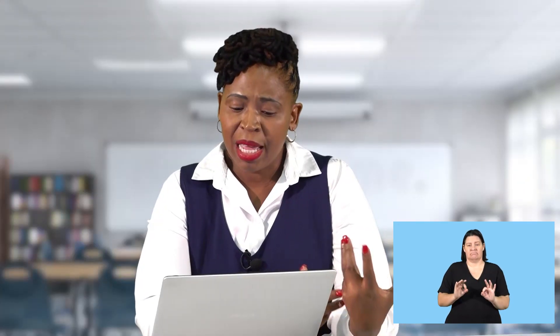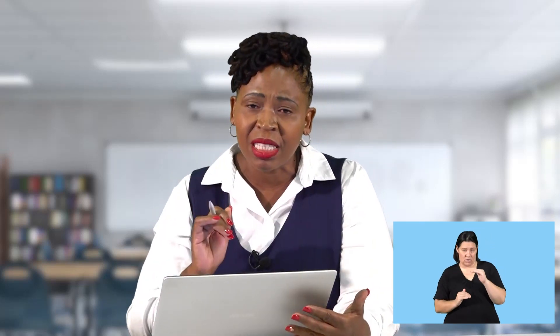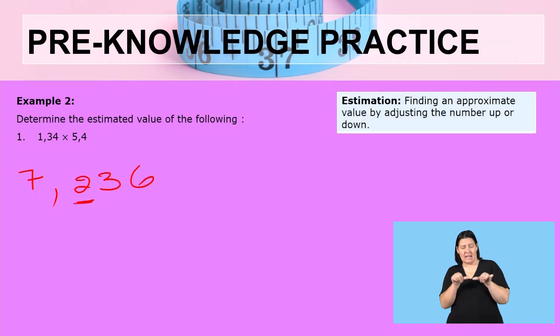Estimation is finding an approximate value by either adjusting upwards or adjusting downwards. Now looking at this value, when we estimate if this value is less than 5, we are going to eliminate the whole decimal. Therefore, we say this is approximately 7.